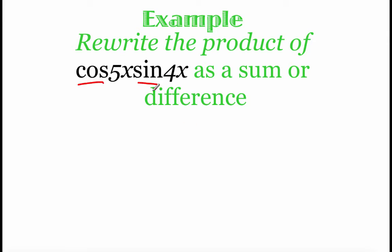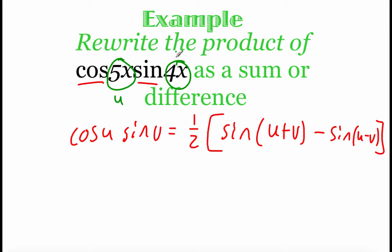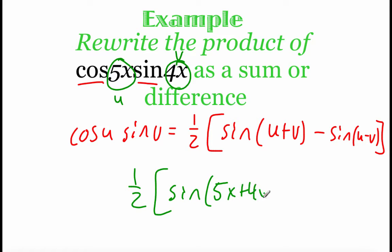We see a cosine times a sine. Checking our formulas, cosine of u times sine of v says we're going to do 1/2 times the sine of (u plus v) and then subtract the sine of (u minus v). Filling in our values, we've got 5x for u and 4x for v. So we get 1/2 times the sine of (5x plus 4x) minus the sine of (5x minus 4x).